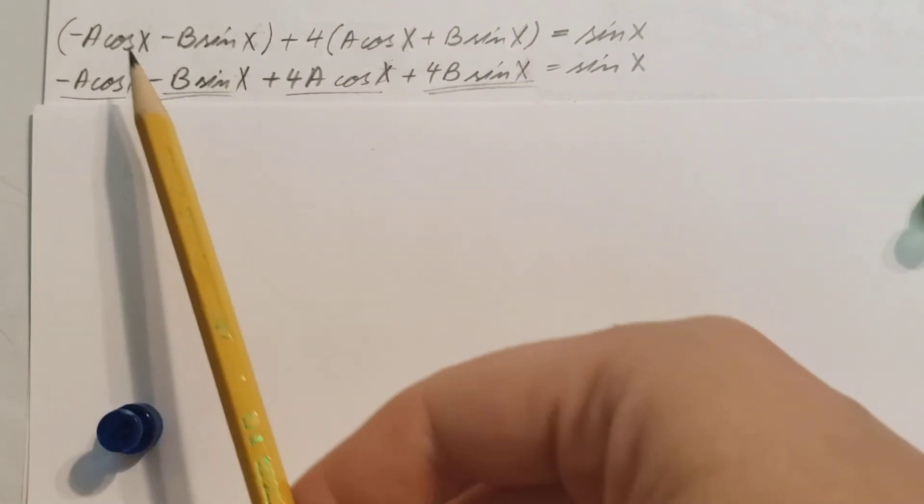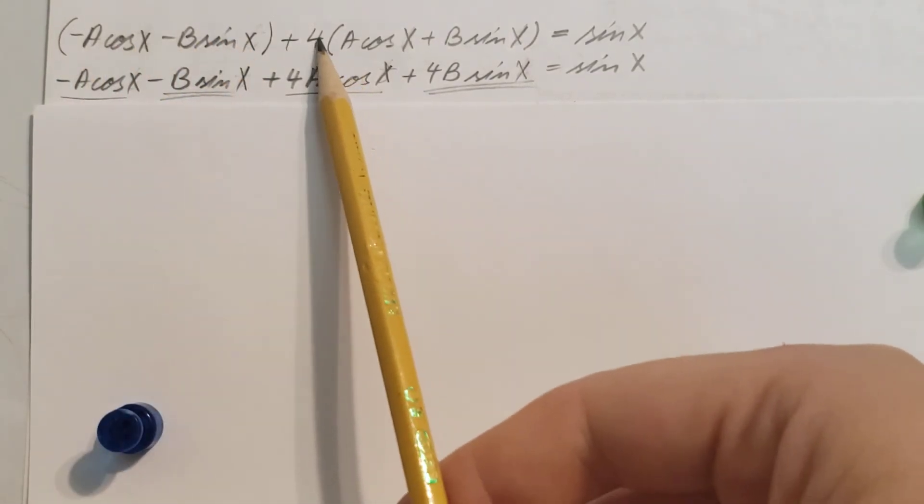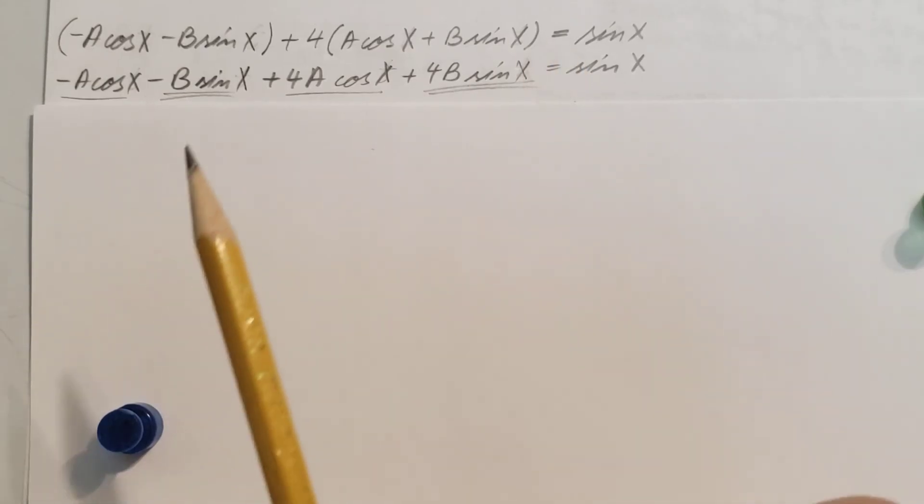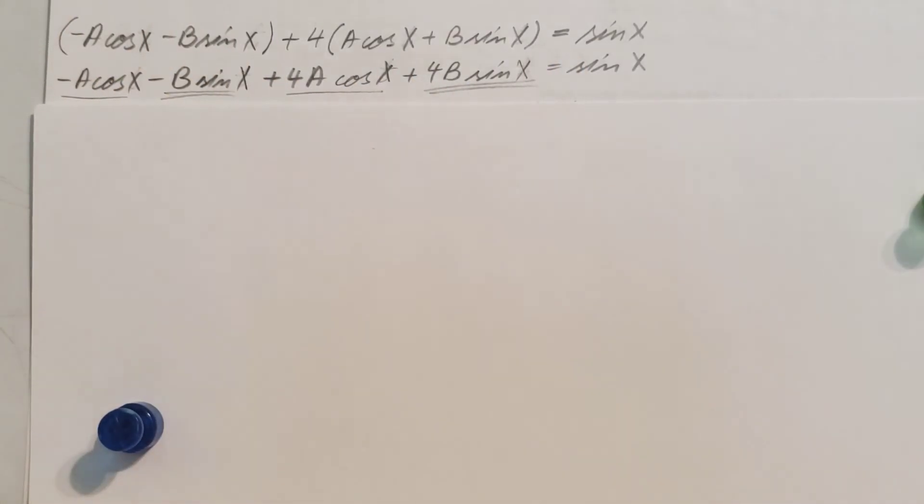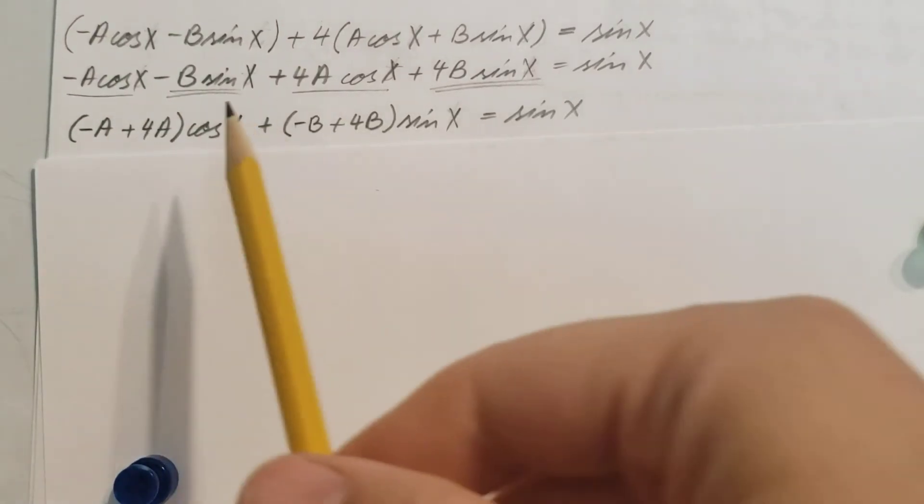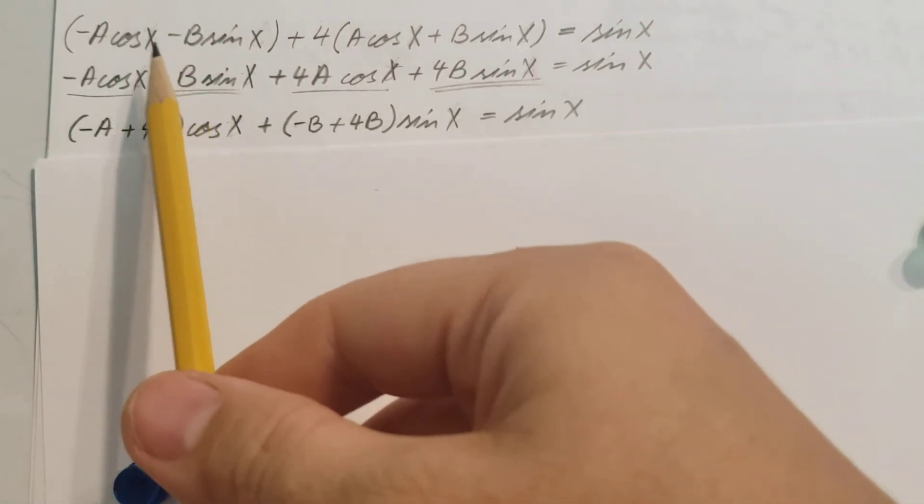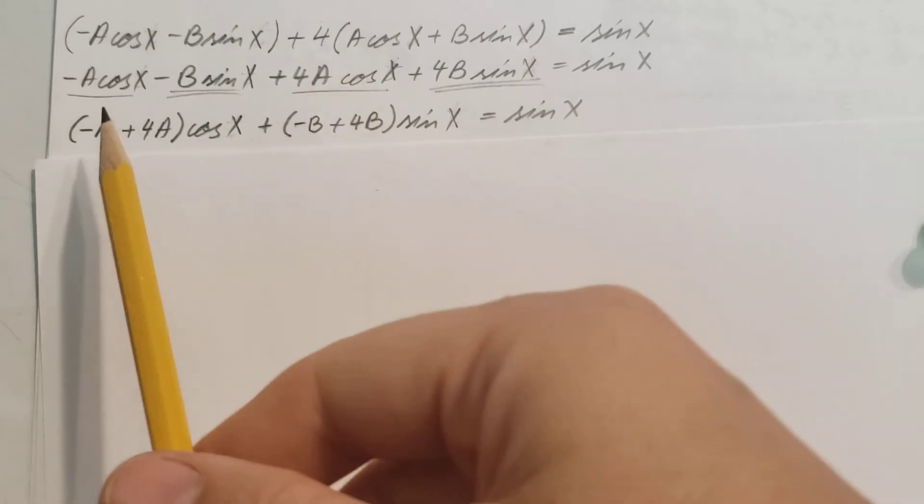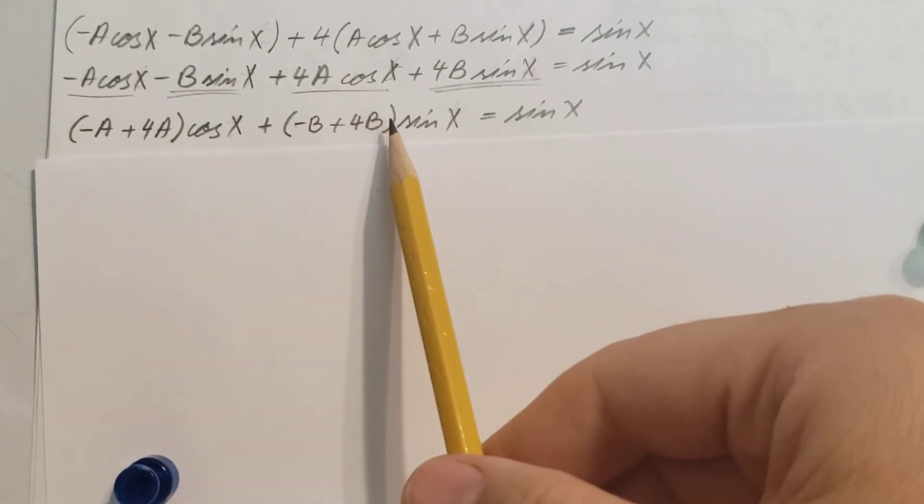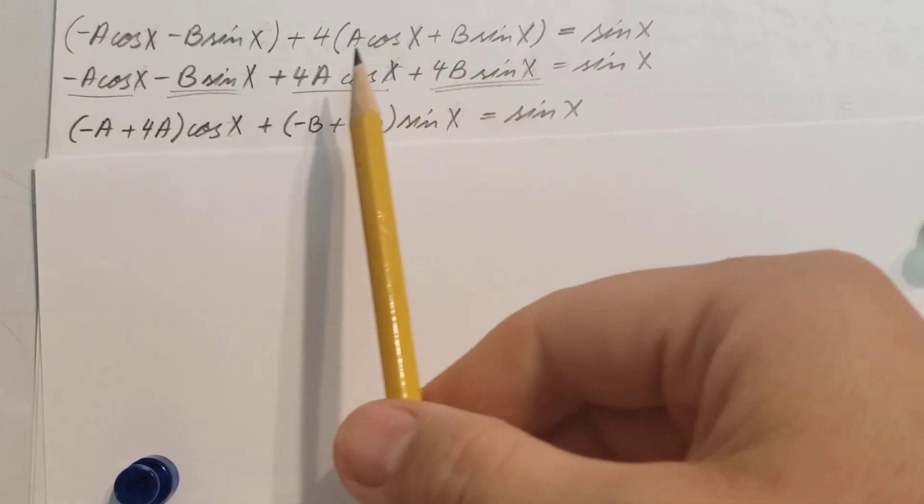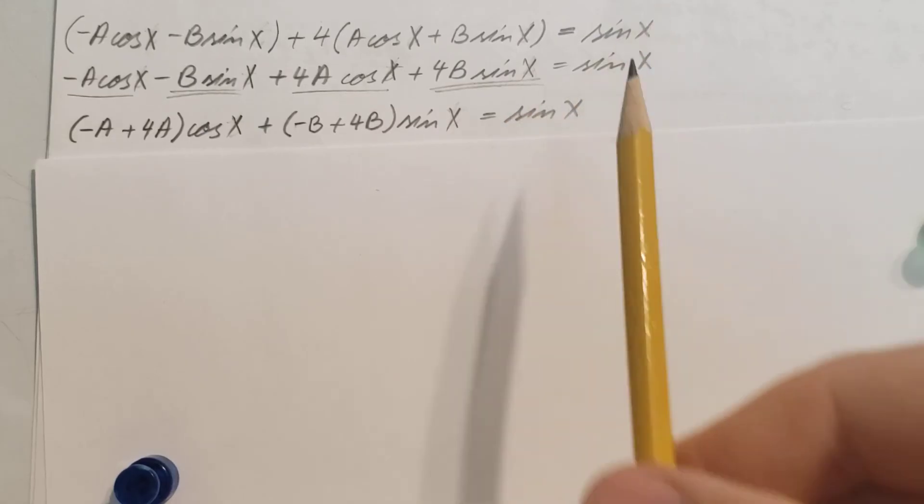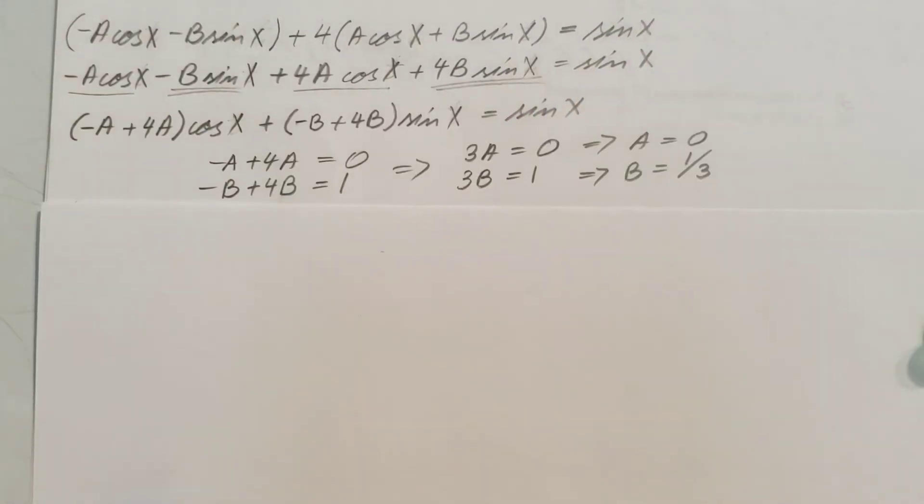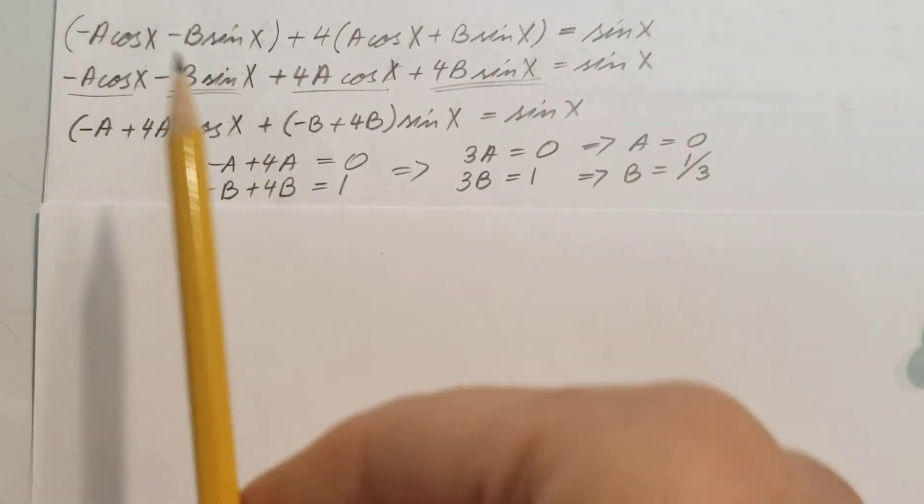We're gonna open up the parentheses, multiply stuff out. Then we're gonna find like terms and combine them. We're gonna factor out the cosine from this one and this one, and that's all we have in front of it. Then the same thing, we're gonna factor out the sine from here and from here—this is what's left in front of it. On the right-hand side we're not doing anything.